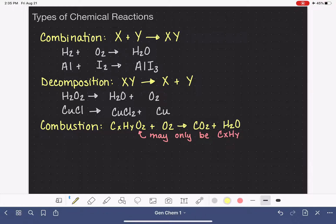So let's make a note here that there may only be CxHy without any oxygen. And so here's a couple of examples of unbalanced combustion reactions. Methane CH4, which reacts with oxygen to make CO2 and H2O. And then also we'll look at propane C3H8, also reacting with O2 to make CO2 and H2O.